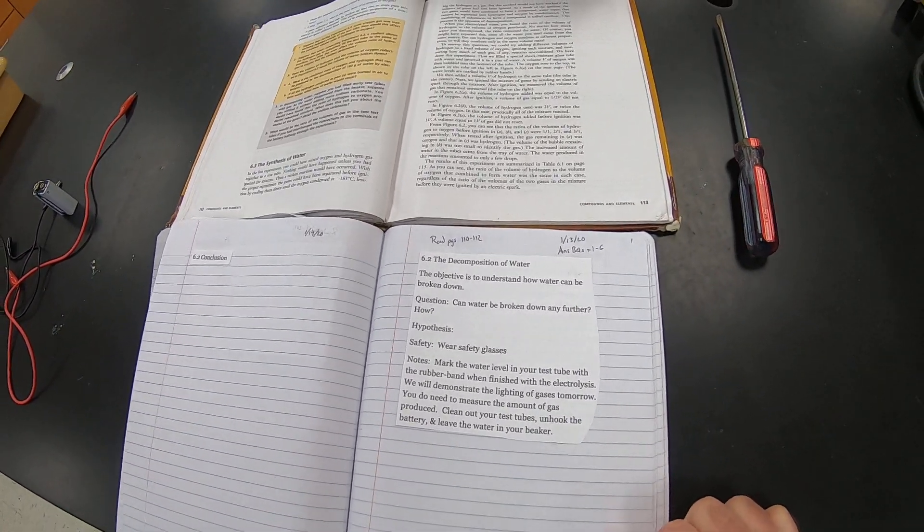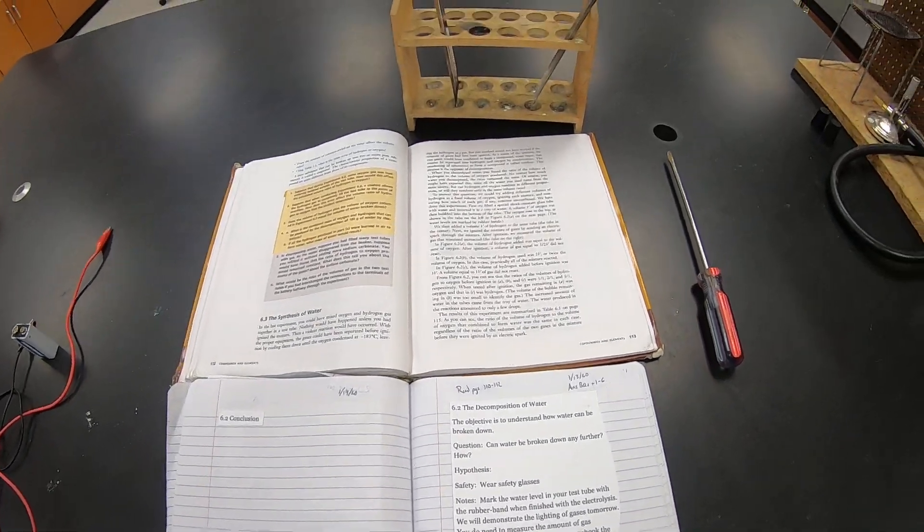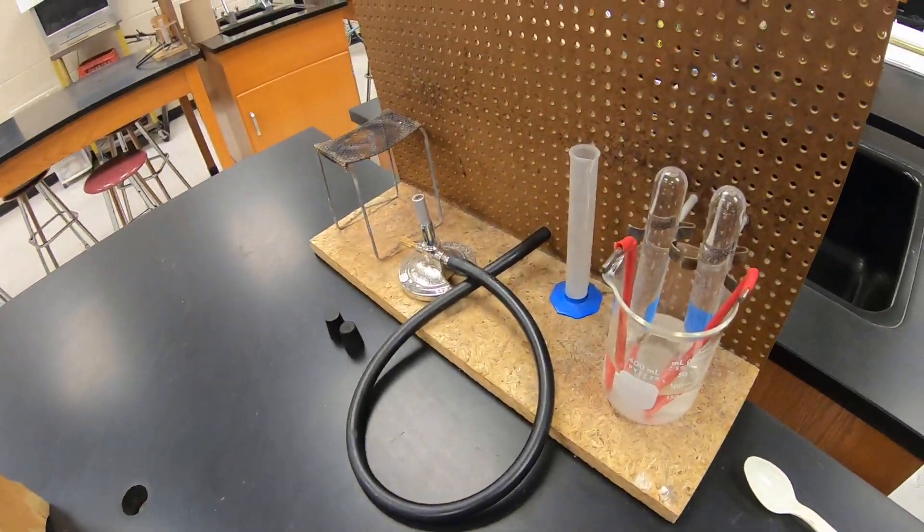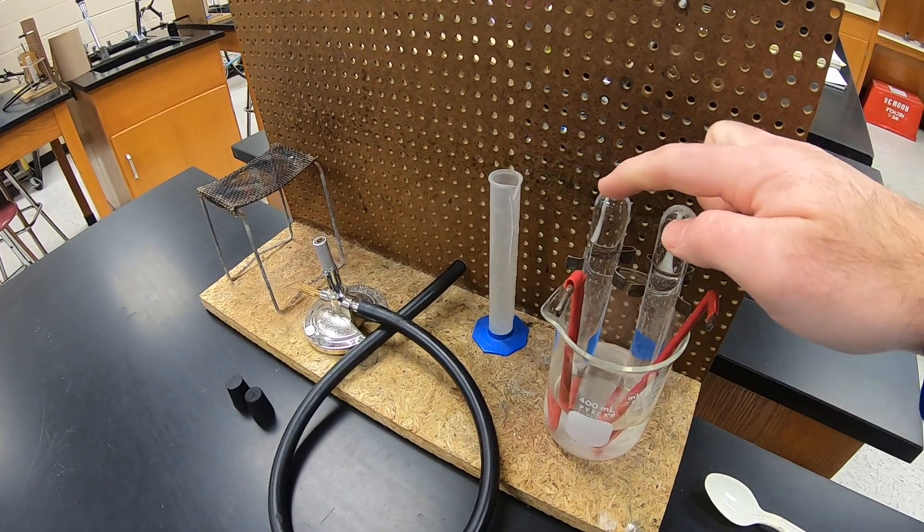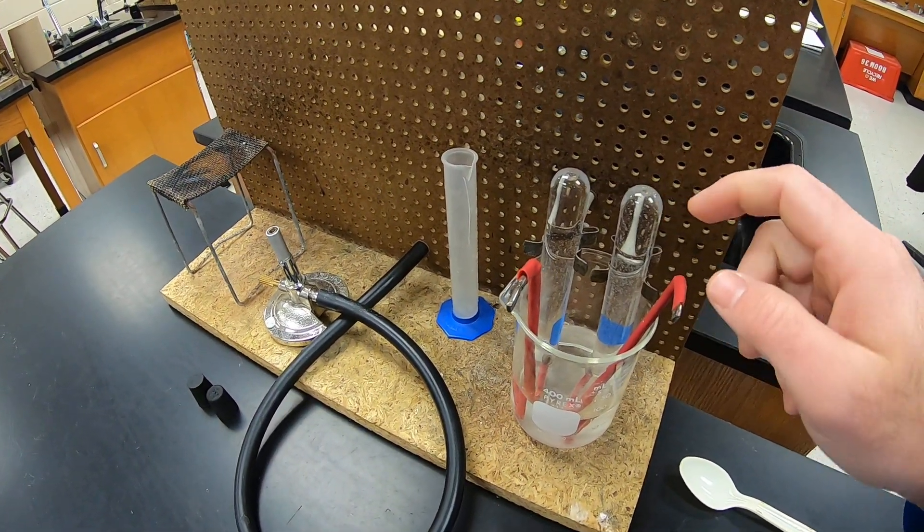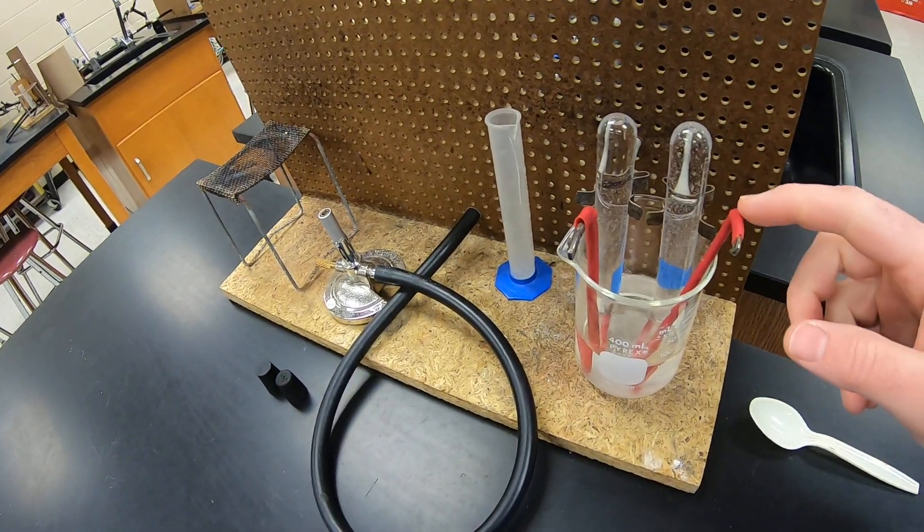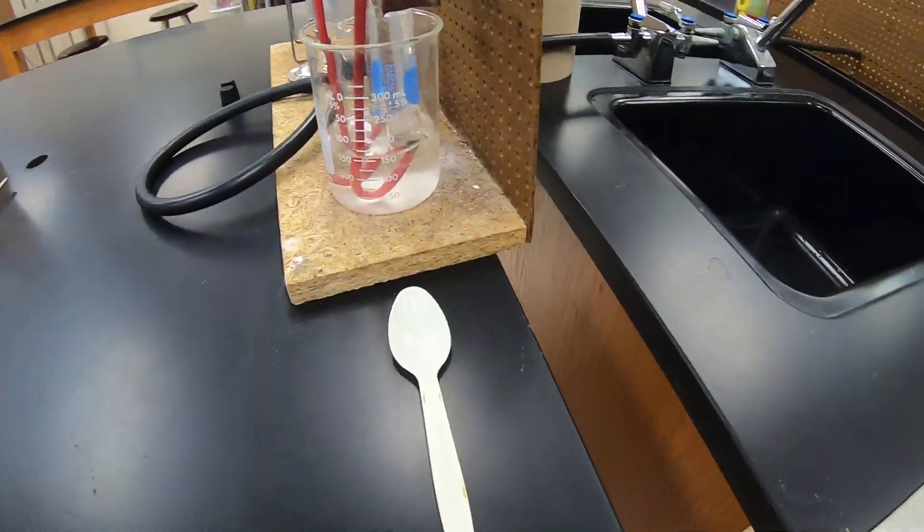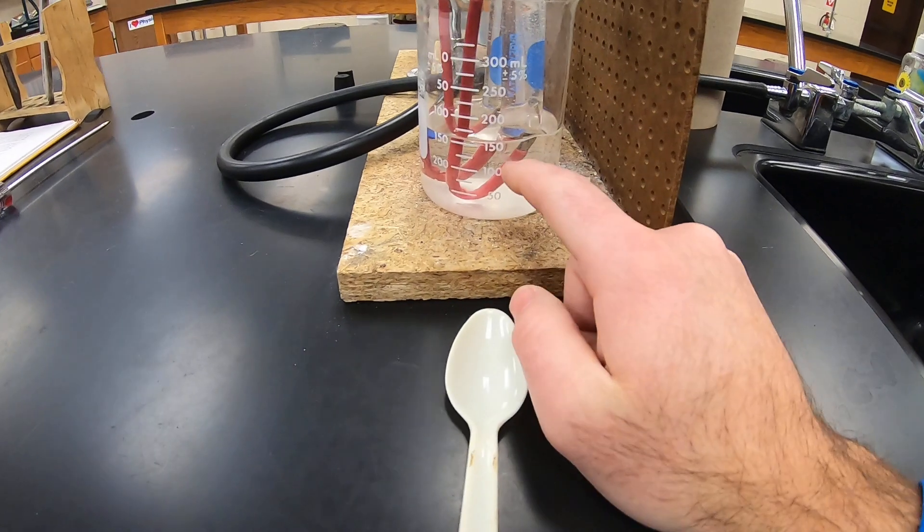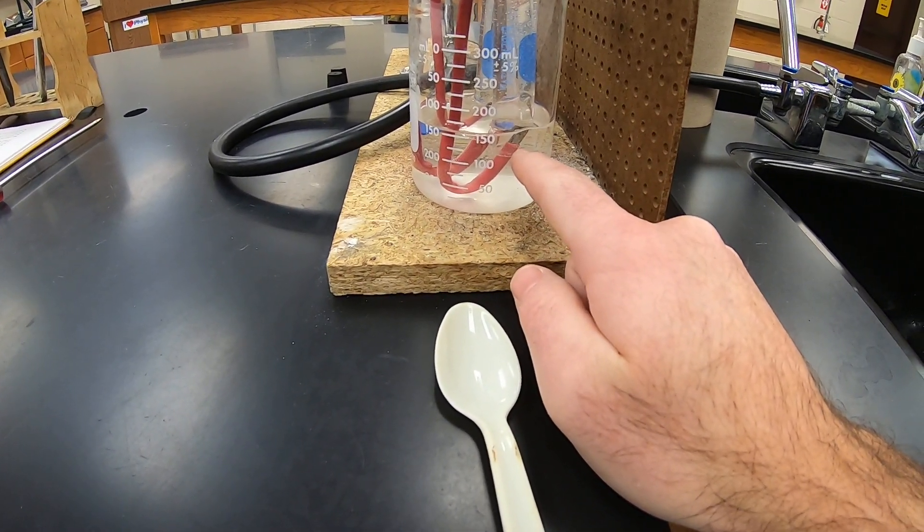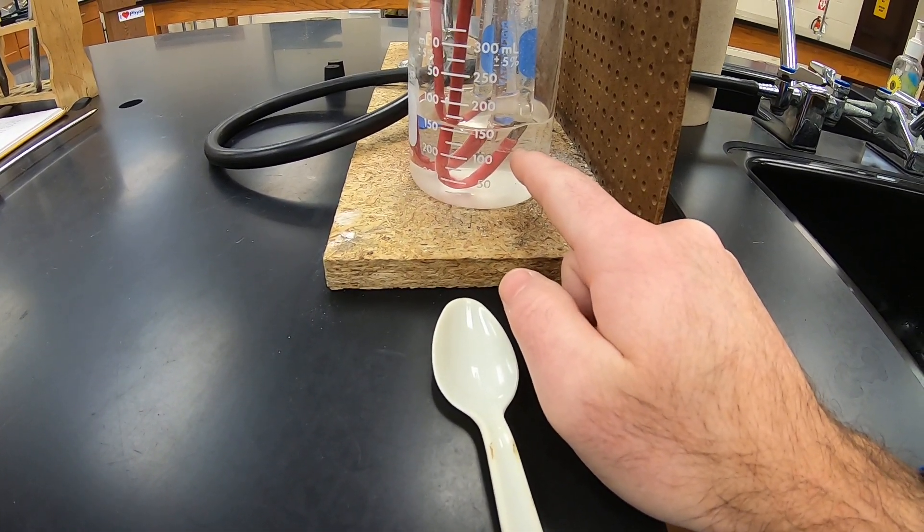We're going to do this video in two parts. So we've already got this set up. I've got two test tubes. Both test tubes are completely full of water. There's a little bit of air in there because I let it sit overnight. And we've got two electrodes, and you can see that the metal part of the electrode is actually in the test tube. The test tube covers it.